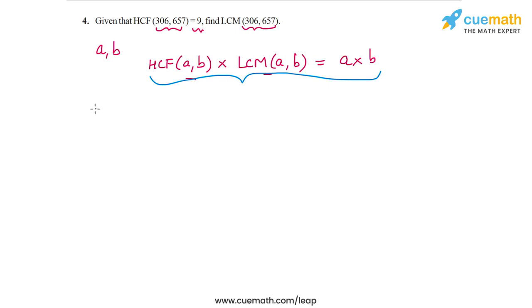Using this fact, let's find out what we get. We have HCF(306,657) × LCM(306,657) equals the product of the integers themselves, which is 306 × 657. From this relation, we can find the LCM of this pair of numbers.